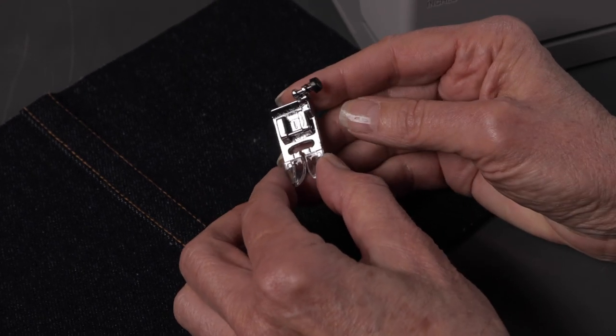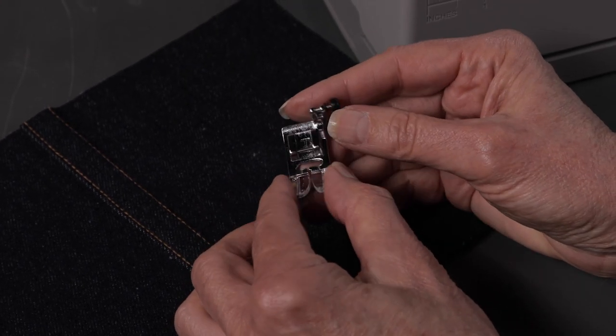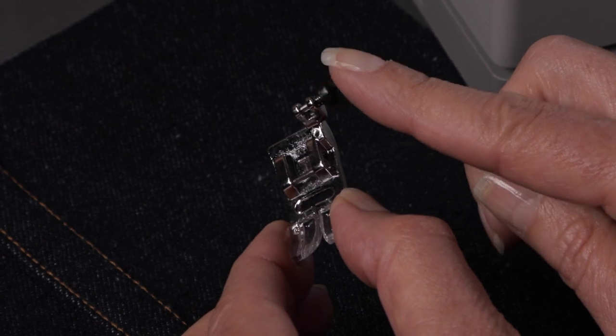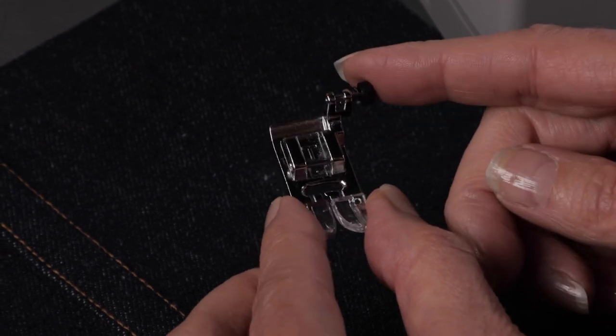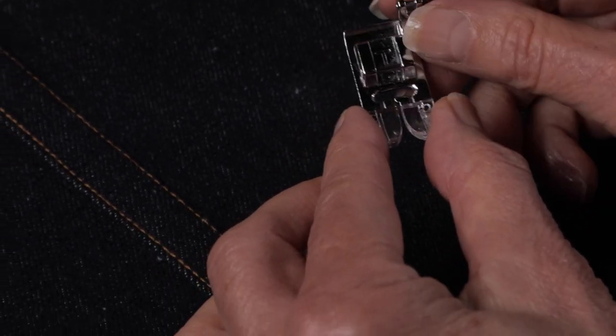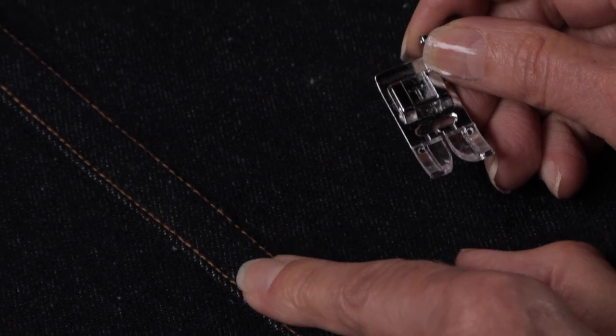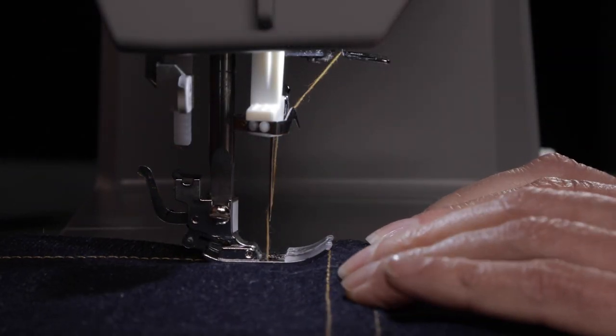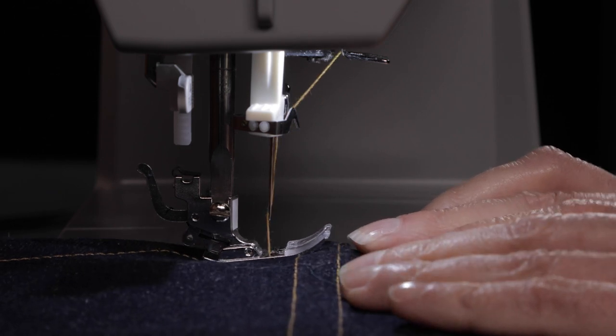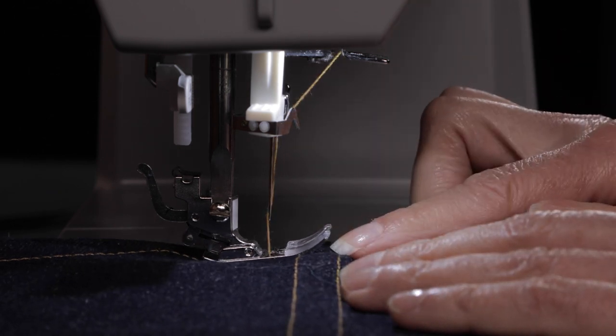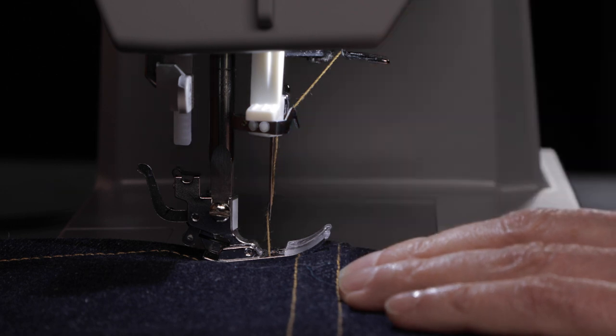Let's take a closer look at your all-purpose foot. You may have noticed that there's this little black button at the side, and that's called your lock and place button. That helps us when we want to do things like sew over thick seams.